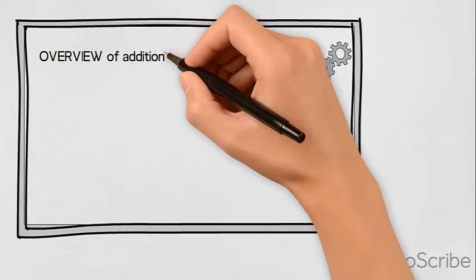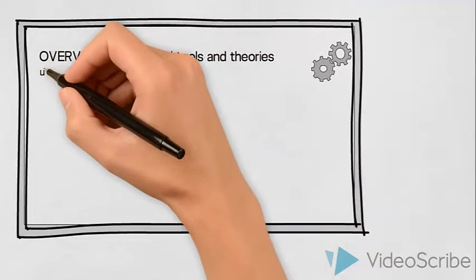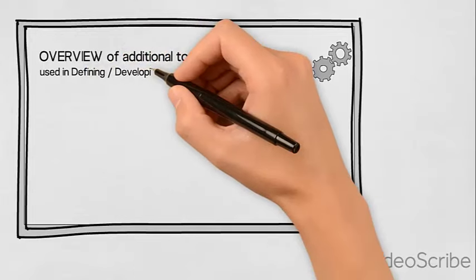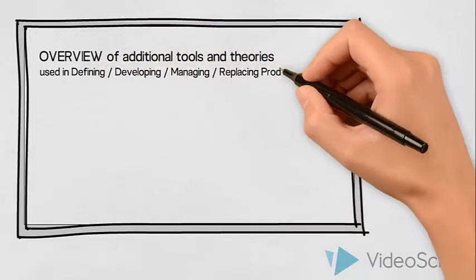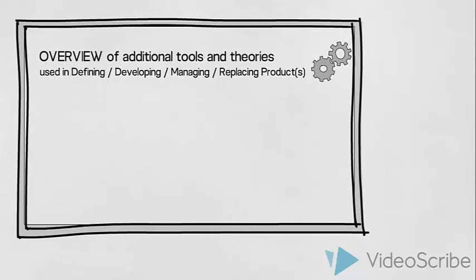In addition to the factors we have just discussed, we as marketers have many additional tools and theories we can use to guide us when defining, developing, managing or replacing a product or a service. These will not be described in detail in this video, but let us just introduce an overview of some of the tools and theories we might want to use.